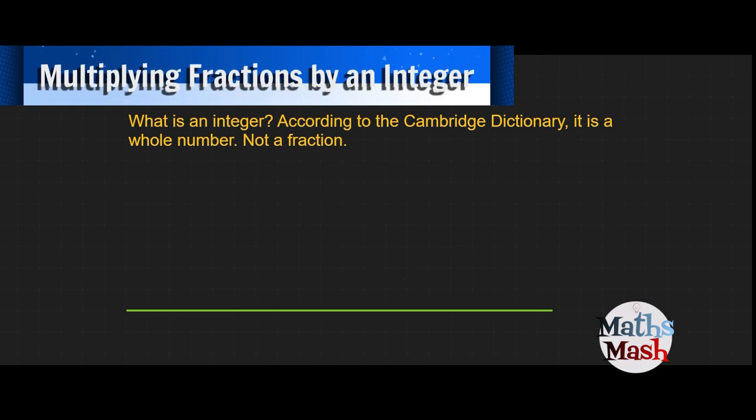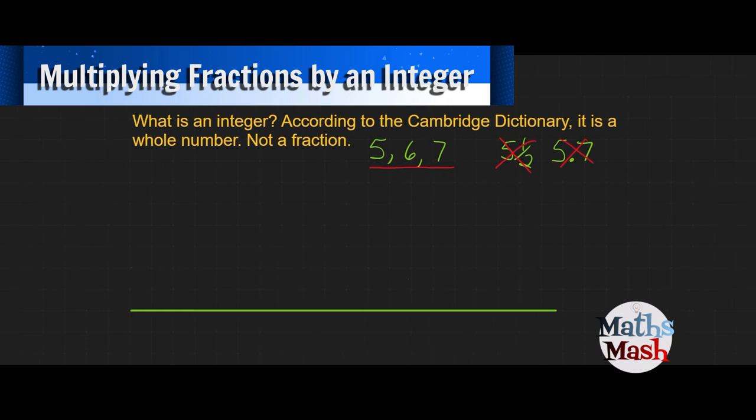So what is an integer? According to the Cambridge Dictionary, it's a whole number, not a fraction. The numbers 5, 6, 7 are whole numbers. Five and a half or 5.7 are not integers because they are fractions or decimal numbers. So 5, 6, 7, 11 would all be integers.